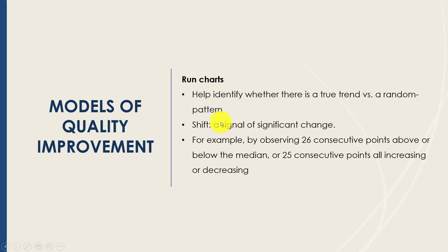One such test involves a shift, which is a signal of significant change. For example, tracking central line infections over time: if you notice six or more consecutive data points above or below your median, that indicates a significant change. Likewise, five or more consecutive points all increasing or decreasing is likely not random fluctuation — there is probably an actual trend. Run charts help identify when significant change has occurred, for better or worse.